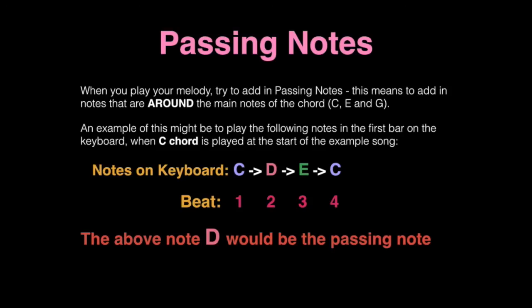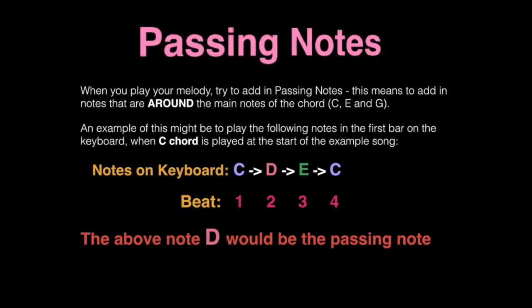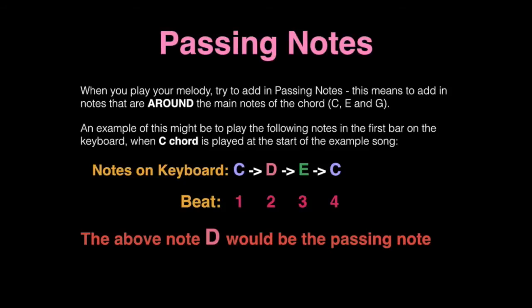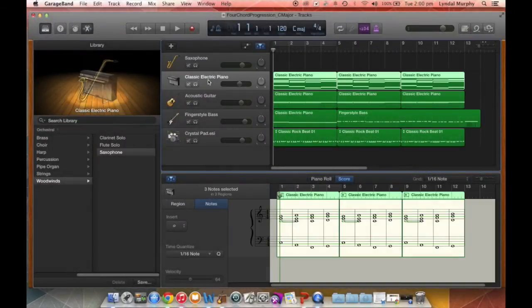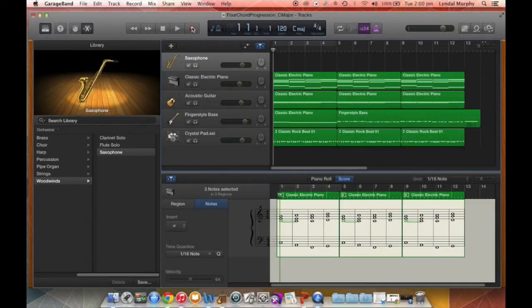To make our melody a little bit more interesting we can add in passing notes, so when you play your melody try to add in passing notes around the main notes of each chord. An example would be playing C, D, E to C — or the melody Frère Jacques — on beats one, two, three, and four in the first bar where the C major chord is played. So let's record our melody using these passing note techniques.